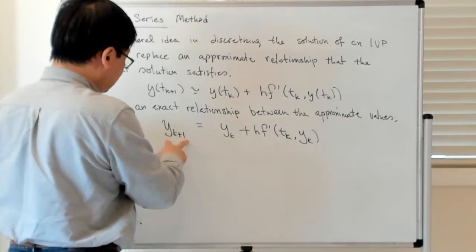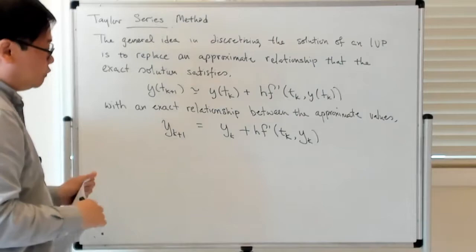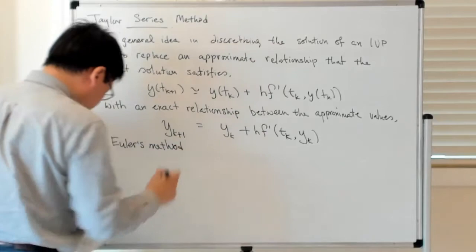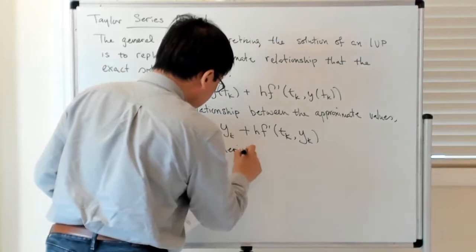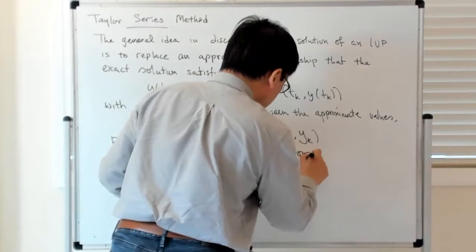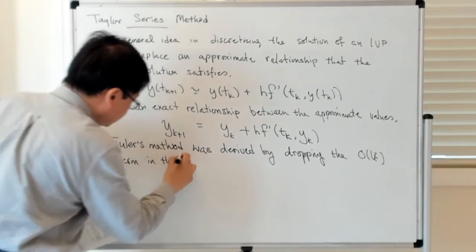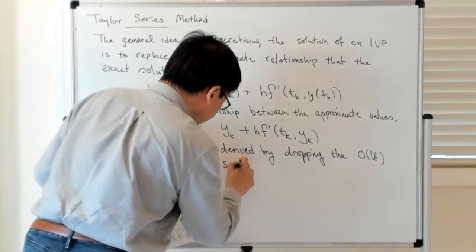This is one way to think about the Euler method, which we talked about before. The Euler method is taking this relationship obtained by essentially truncating the Taylor theorem — by ignoring the order h squared term. That's an approximate relationship for the exact solution, thought of as an exact relationship between the approximations of the solution. So Euler's method was derived by dropping the big O of h squared terms in the Taylor series expansion.